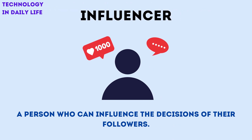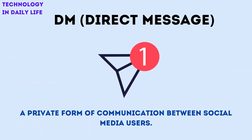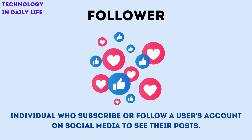An influencer is a person who can influence the decisions of their followers. A hashtag is a word or phrase used on social media to identify specific topics or themes. A direct message is a private form of communication between social media users. A follower is an individual who subscribes to or follows a user's account on social media to see their posts.